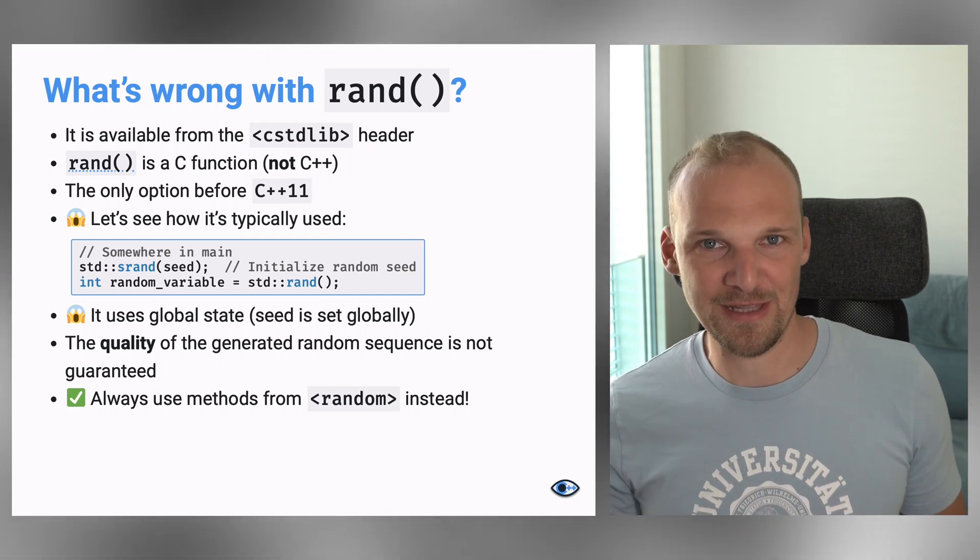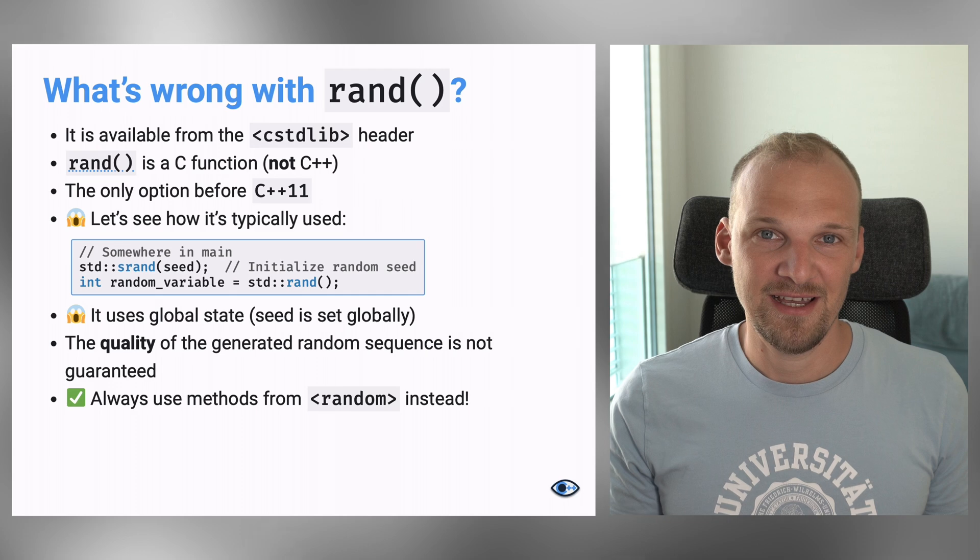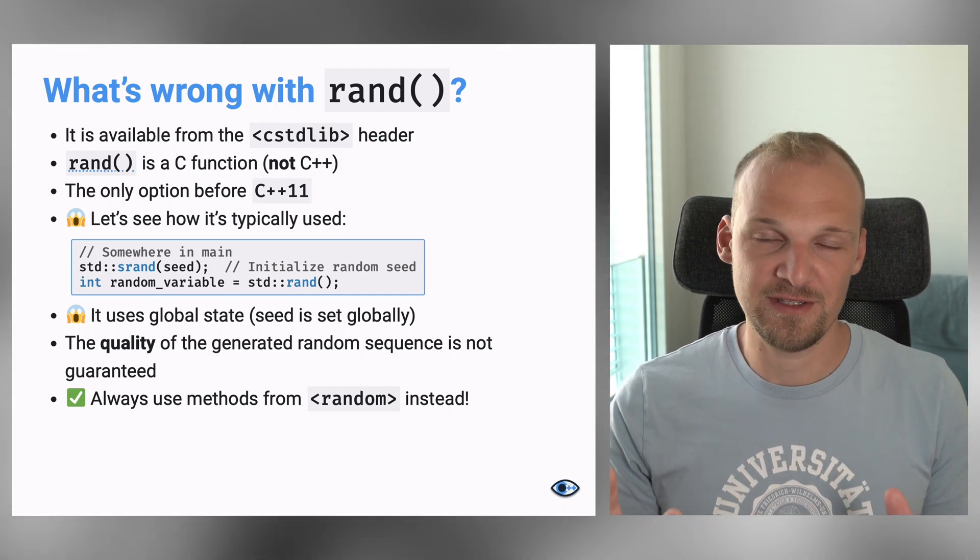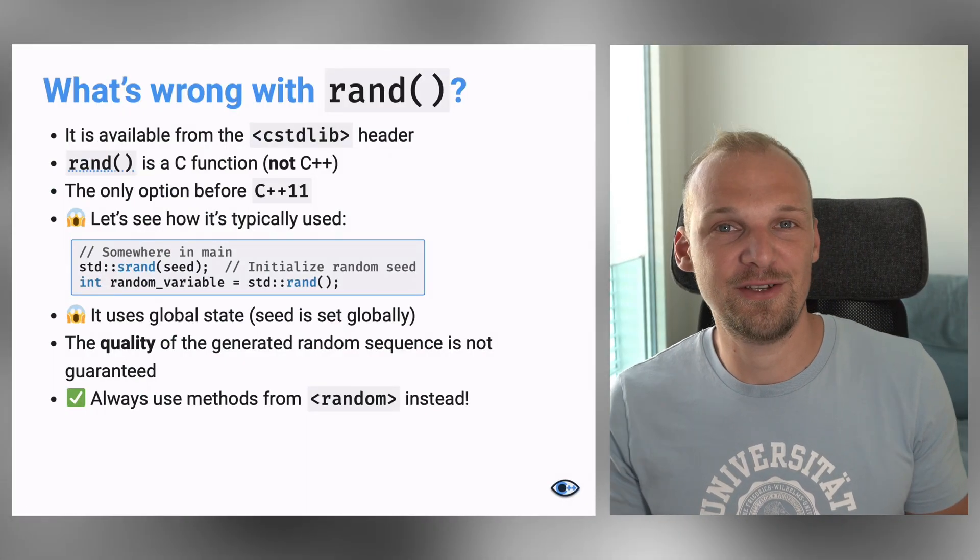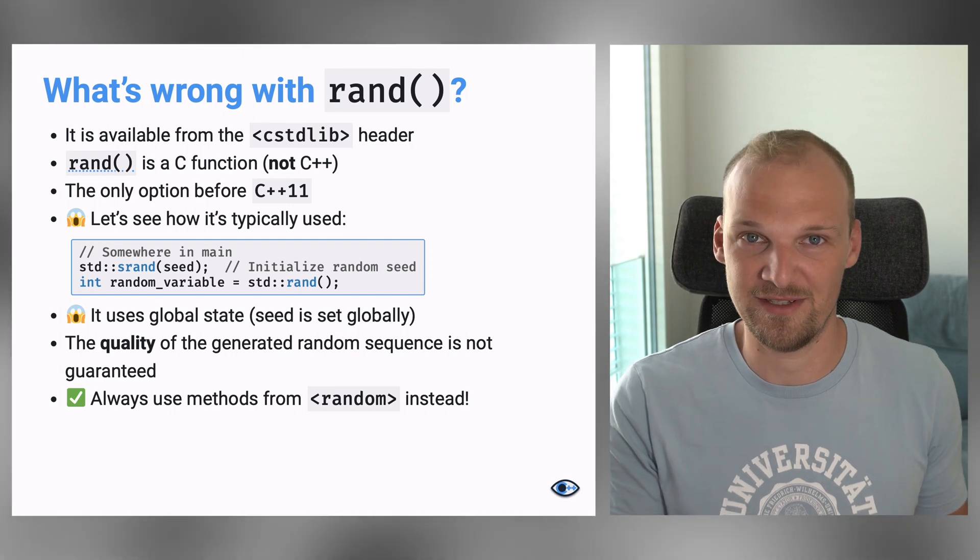The problem with all of this, well, there are actually multiple problems with this. The first one is that you can see that there are no objects here, right? These are just functions that manipulate some global state. And global state is always bad. Whenever you have a global state, it means that if you change it in one place of your program, you can have unexpected consequences in another part of your program. And these are really hard to debug. So, people move away from having a global state more and more and more. And you will see this a lot in C++, that we go away from the global state and have very nicely encapsulated parts of the program.